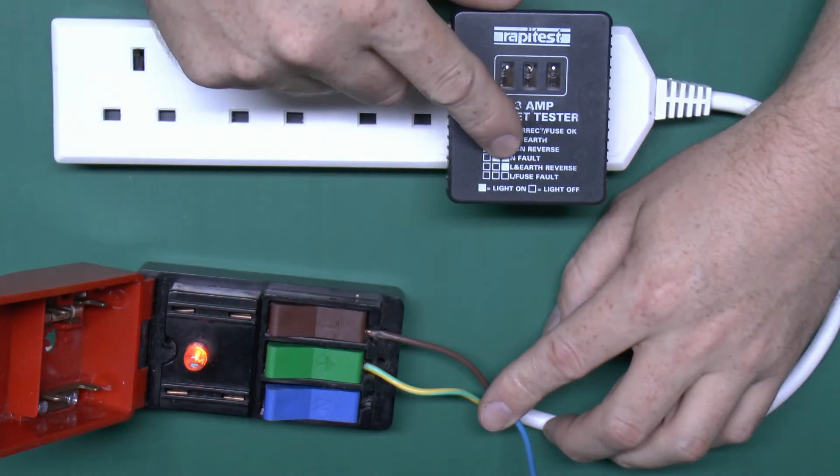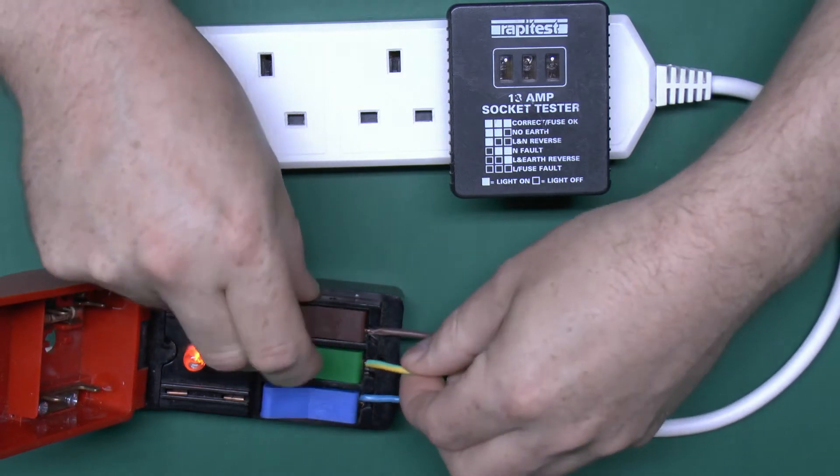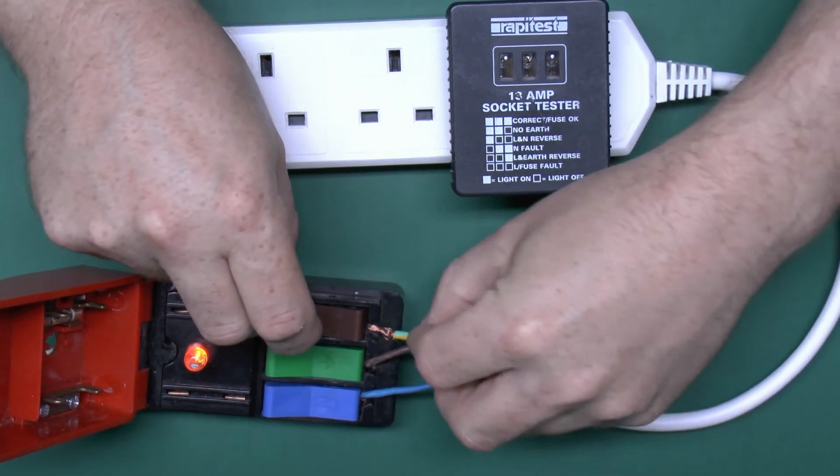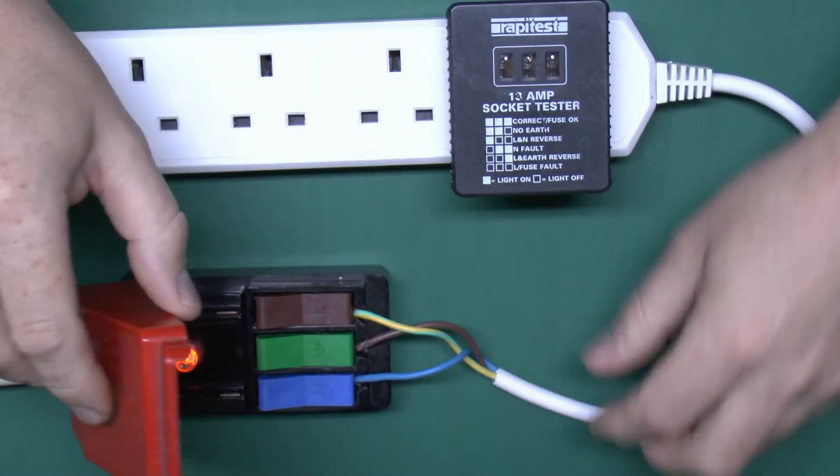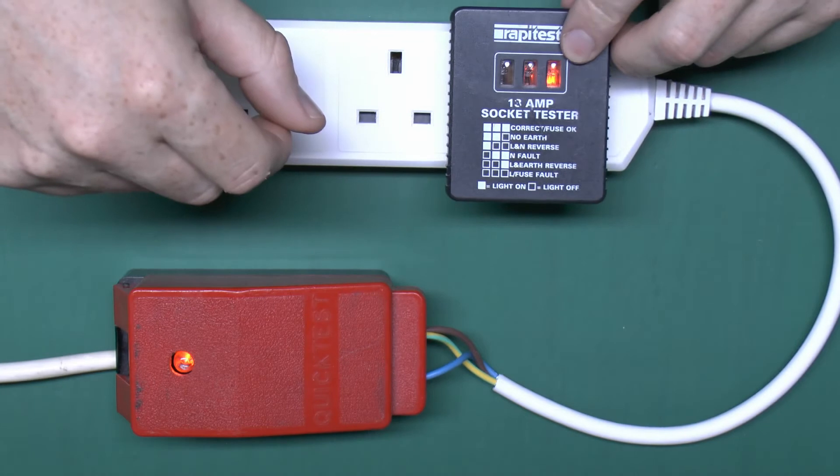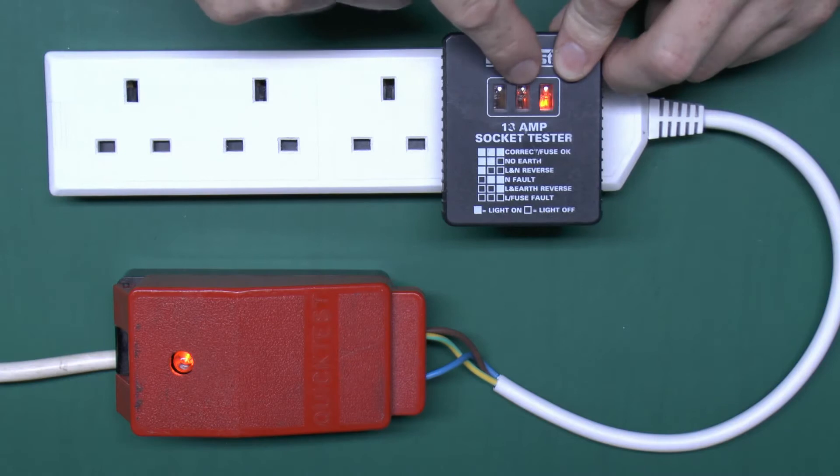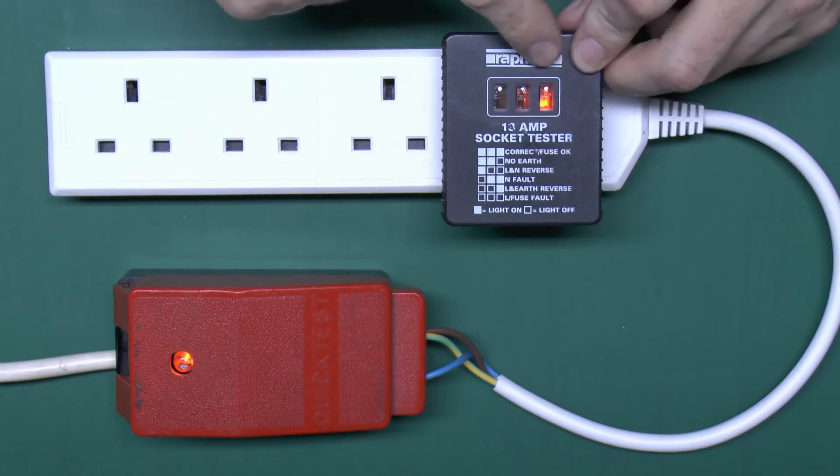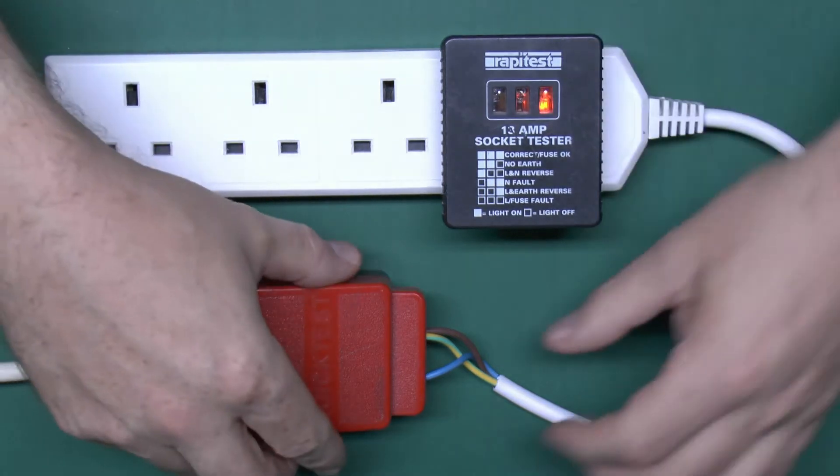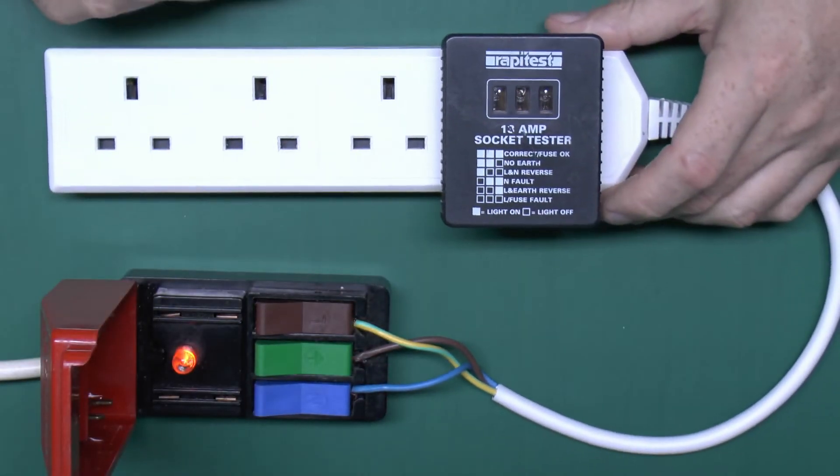And then we've got line and earth reversed, which of course will be those two switched around. Now that should just have the single light on the end there, which it does, although there seems to be a bit of light bleeding through into the compartment next to it, but anyway one lamp is illuminated there. And of course the last one is that there's no power, well obviously it doesn't light up at all.